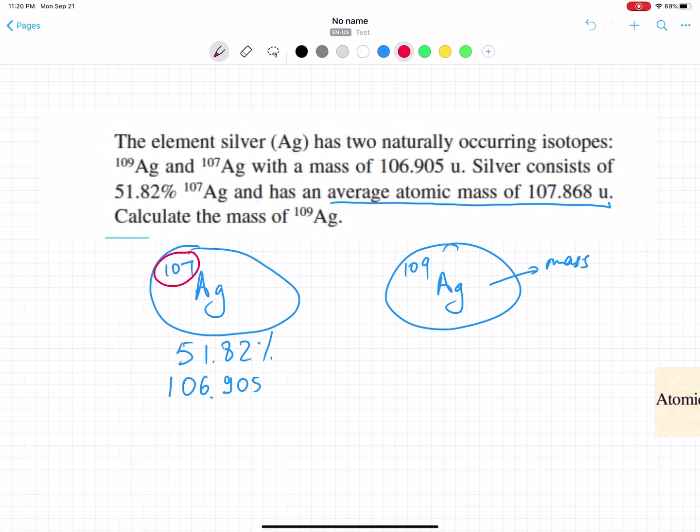So they just want to find what's the mass of Ag-109. Sorry, that's not in grams - it's in unified atomic mass units because we're calculating only the mass of one atom.